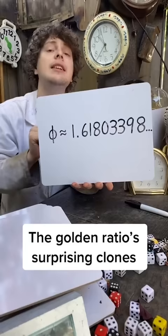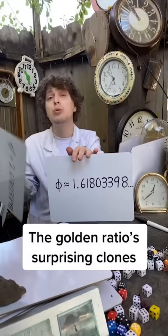And here's the golden ratio squared, and here's one divided by the golden ratio. Do you notice anything similar?